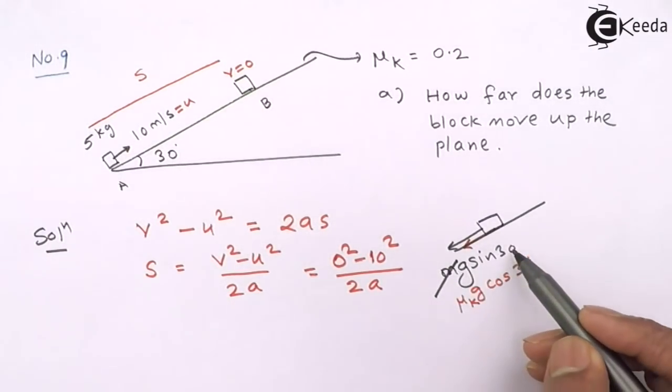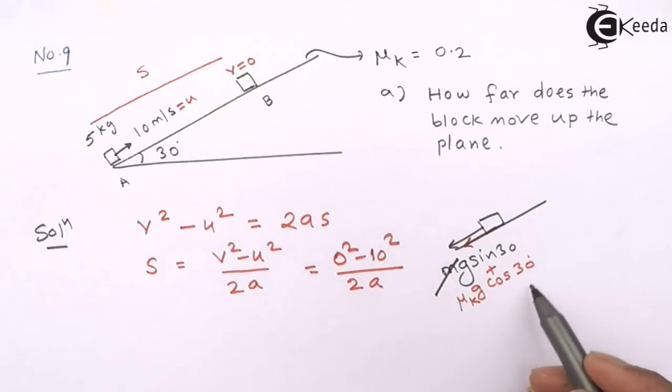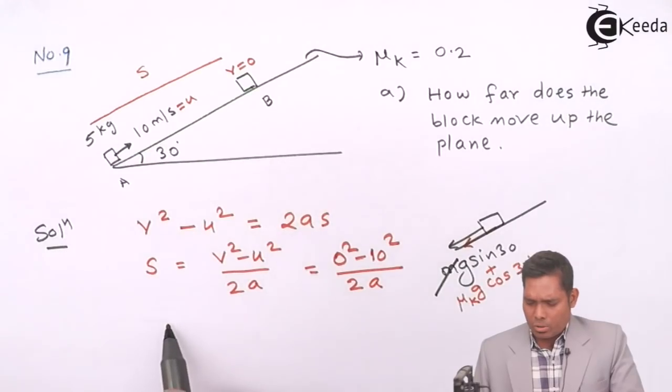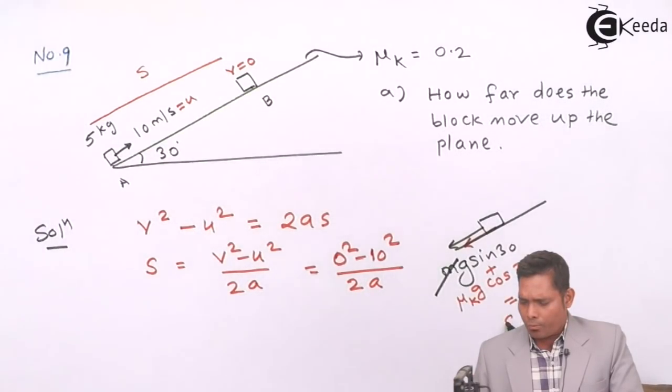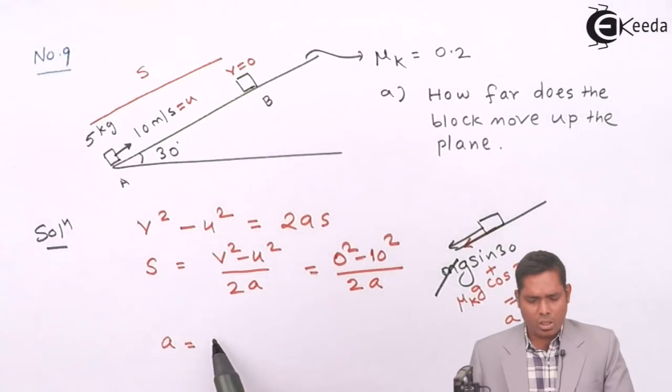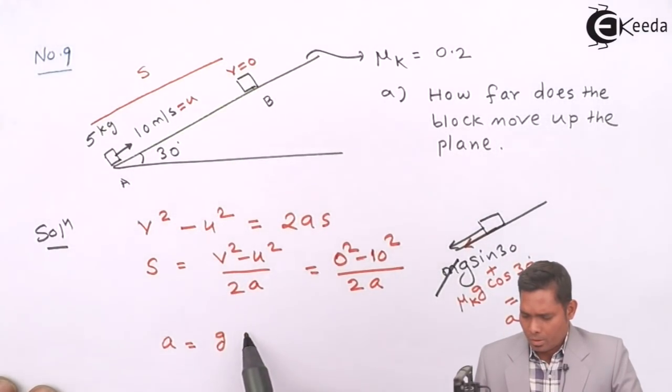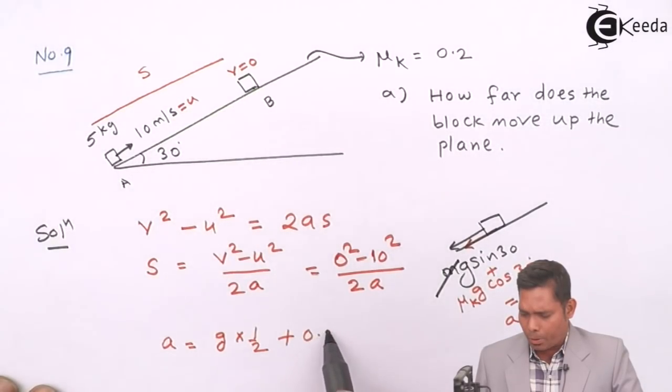And the acceleration, that is μk, Mg cos θ. M is not there, so g cos 30. So these two accelerations together are preventing or decreasing the velocity, and finally it comes to rest here. So this is the net acceleration in the downward direction. So this net acceleration A is the sum of these two.